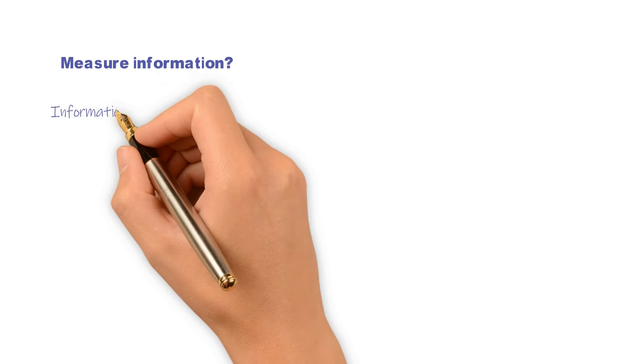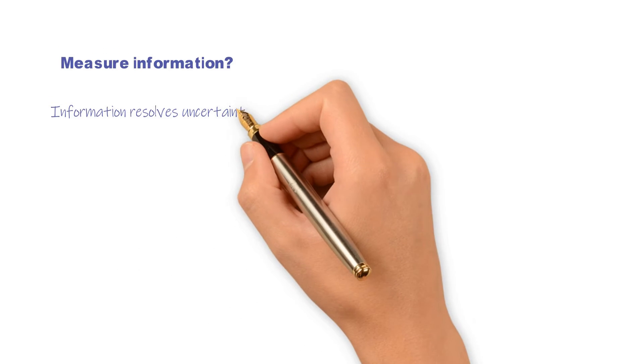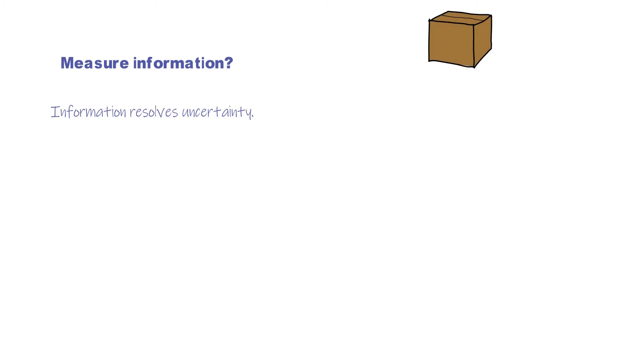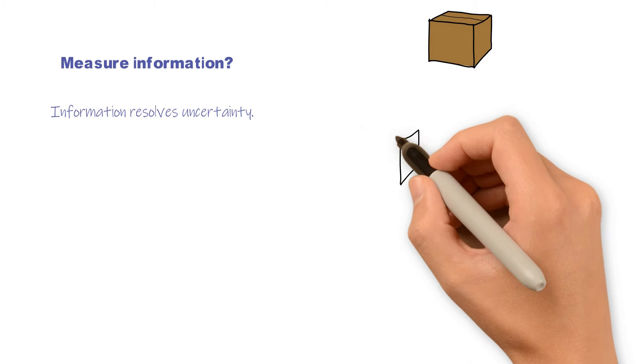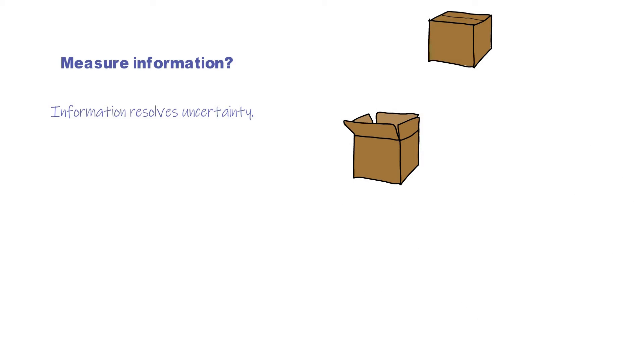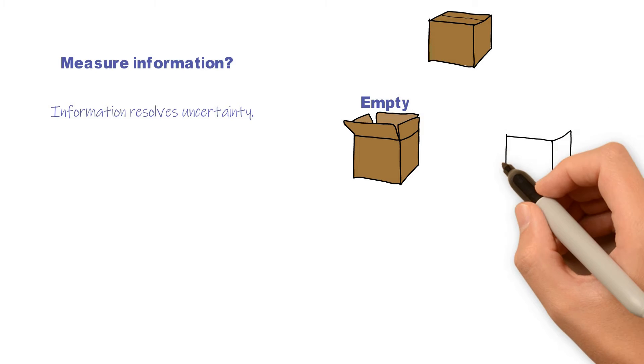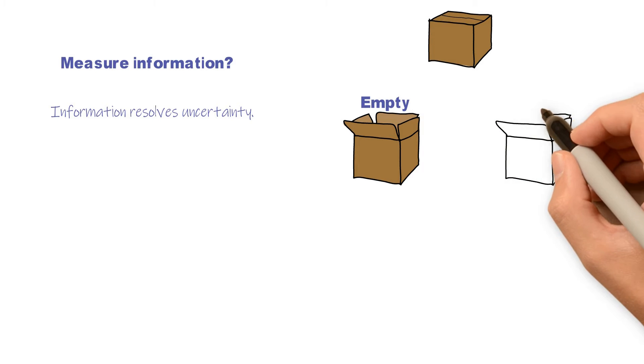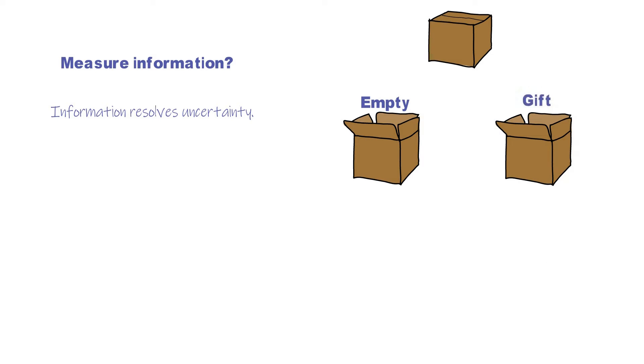We can measure distance and weight. Can we measure information? The answer is yes. Let me show you how with several examples. Information resolves uncertainty. For example, if I told you that there is a gift in the box, this statement is information, since before I told you this could be an empty box and now you know there is a gift inside it. Knowing that information resolves uncertainty gives us a clue to measure it.